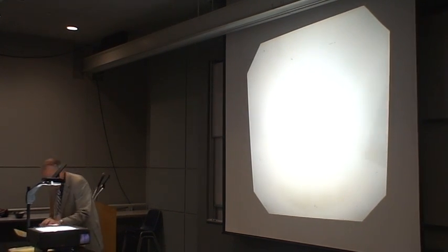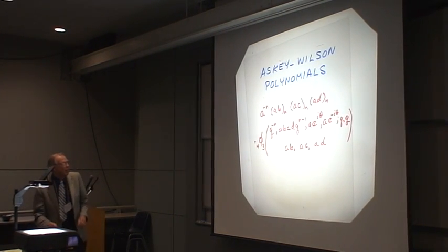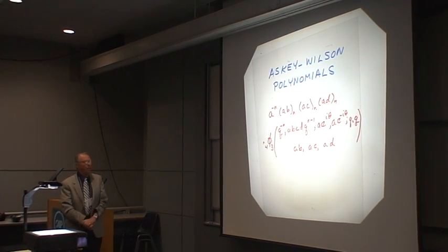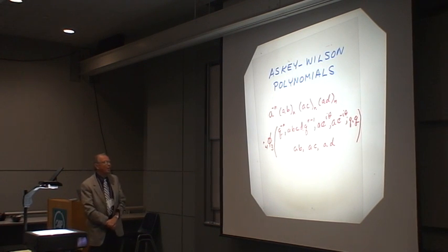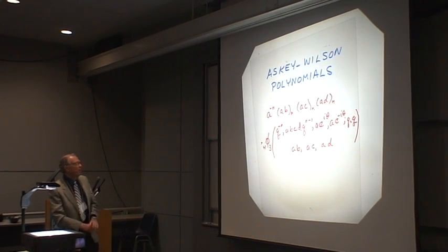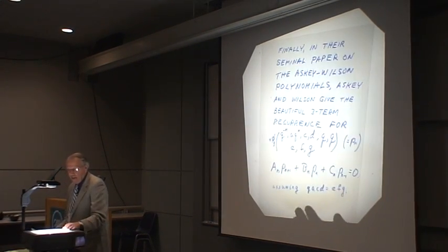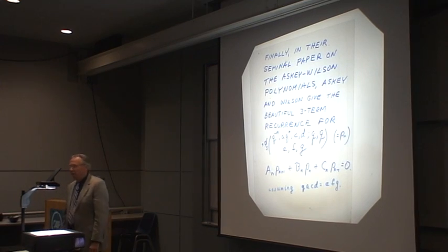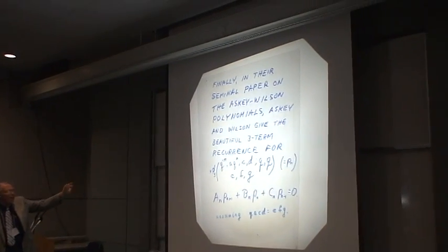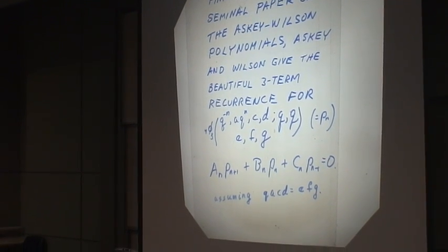There is, of course, beyond this, the Askey-Wilson polynomials, which are now 4 phi 3s, and indeed, what are called balanced 4 phi 3s, where q times the product of the top entries equals the product of the bottom entries. And in their seminal paper on this, they tell you precisely what the full three-term recurrence is for this balanced 4 phi 3. So you have everything, so to speak, spelled out for you in the literature.